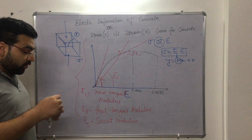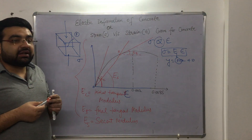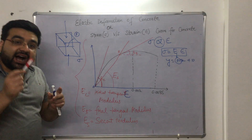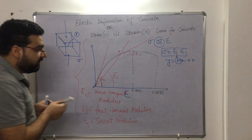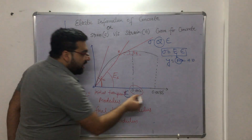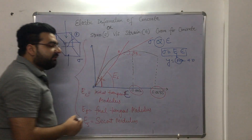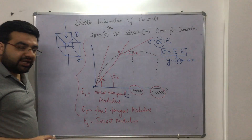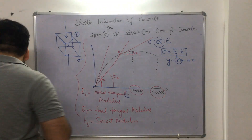Now let us look at the curve given by the IS code. In that curve I will explain what the strain values of 0.002 and 0.0035 mean. Let us see what that curve looks like.